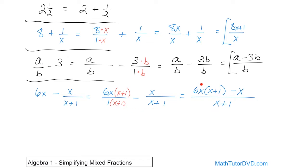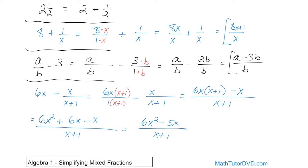Now I have to multiply six x times x plus one, minus x, all over x plus one. Six x times x is six x squared, and six x times one is six x. The minus x comes along for the ride. So on top I get six x squared plus six x minus x, which gives six x squared plus five x over x plus one. I initially wrote it as negative five x — that was a mistake. Six x minus x is positive five x, so the correct answer is six x squared plus five x over x plus one.